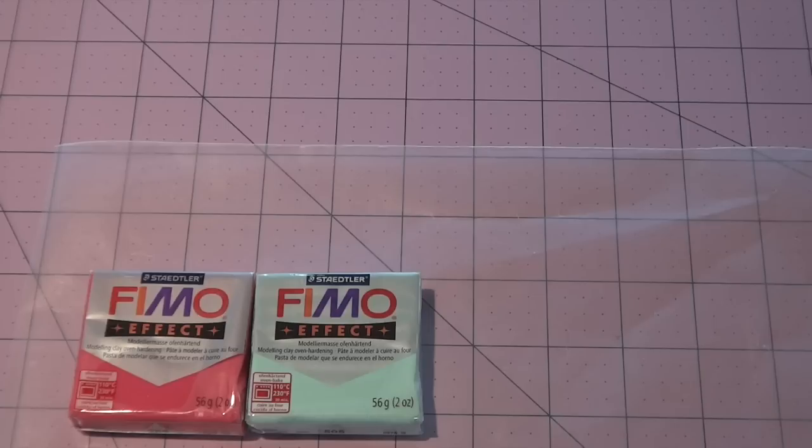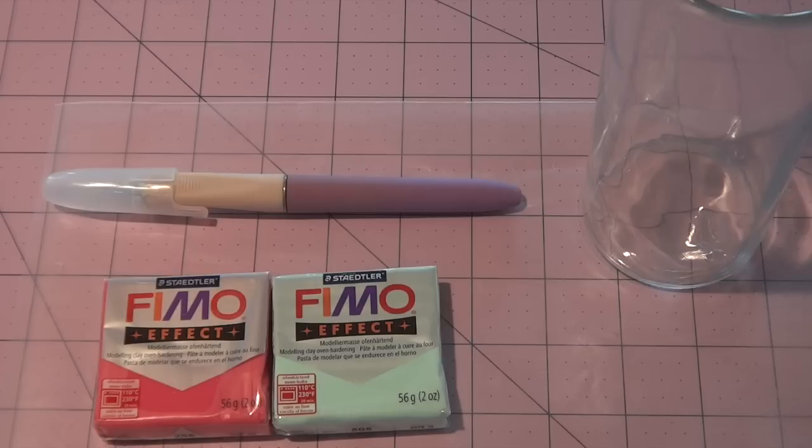You're also going to need polymer clay of course and the colors you want to make your coaster. You're also going to need an exacto knife and a glass of some sort. We're going to be using this as kind of a rolling pin and also to trace out the coaster. So now let's get started.